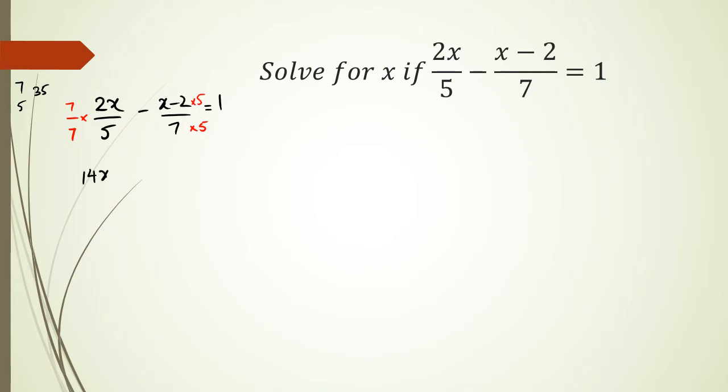Which means I will end up with 14x, because 7 times 2x is 14x, over 35 minus, now this is the part, remember I talked to you guys about earlier, you got to be careful about that 5, putting that negative outside the bracket, otherwise you'll forget to multiply it, which is also over 35 equals 1.